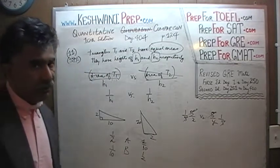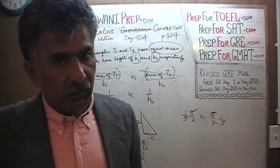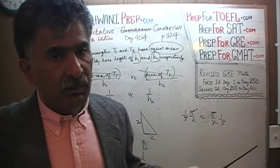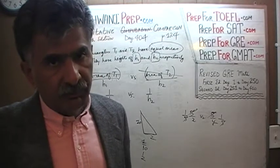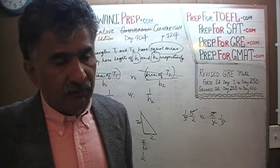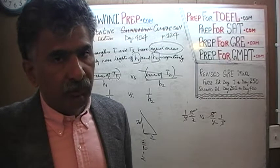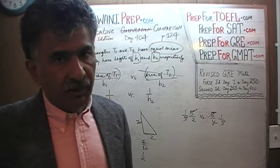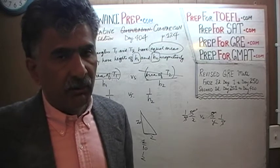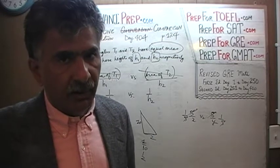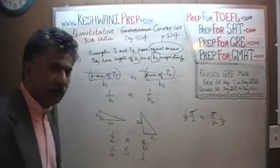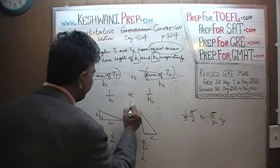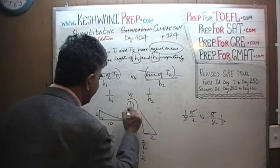We do not know anything at all about the triangles. How can we compare their heights? If I come up to you and simply tell you that I have two triangles whose areas happen to be the same, just because their areas are the same, I cannot tell you what their heights are going to be. It's impossible because we know nothing about the base. So the answer is D.